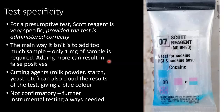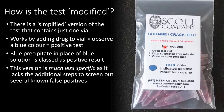One thing you may be thinking is: why is the test modified? This is because there's a simplified version of the test that contains just one single step. Looking at it, you can see it's a pink solution — nothing but cobalt thiocyanate in water. Performing the test is similar: you add your suspected drug sample to the vial, and if you see any blue colour at all, it's considered a positive result. This simplified Scott test is much less specific, as it lacks the additional steps needed to screen out known false positive results.